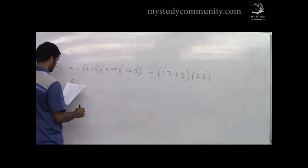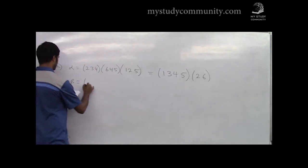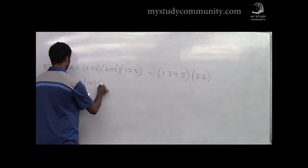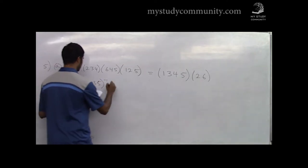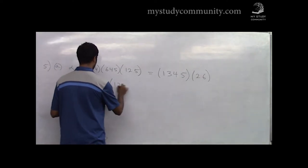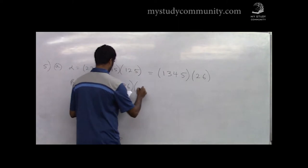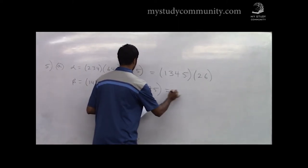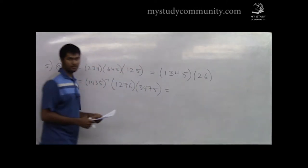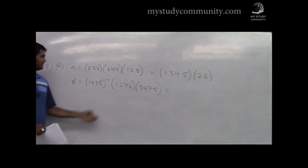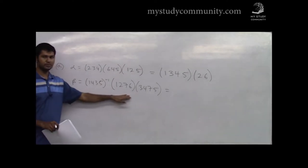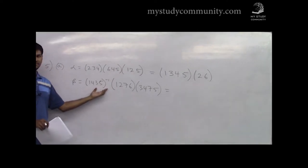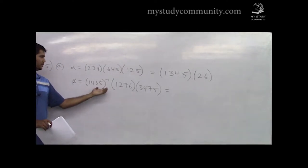Now we need beta, which includes an inverse cycle (1 4 3 5)⁻¹. To find the inverse of a cycle, remember the method — for this particular case you can write it as (1 5 3 4). You reverse all elements and rearrange so the first comes first.